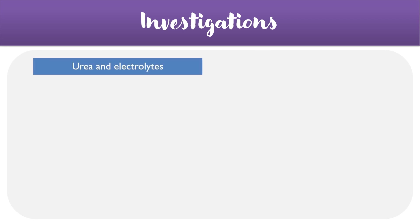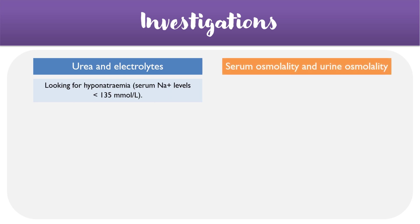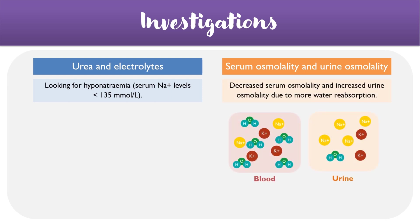For the diagnosis of SIADH, we can start off by looking at routine investigations — for example, urea and electrolytes — and we're looking for the hyponatremic effect when sodium levels are less than 135 mmol per litre. We can then follow this up with serum osmolality and urine osmolality studies. The main things we're looking for are a decreased serum osmolality, meaning a decreased sodium concentration, and an increased urine osmolality where there's less water present in the urine — both effects occurring due to more water being reabsorbed.